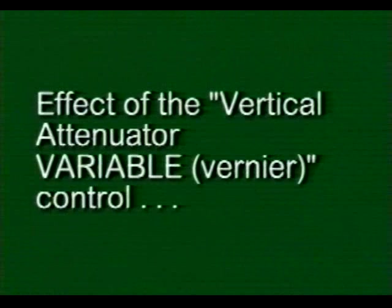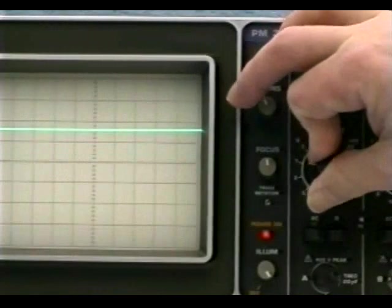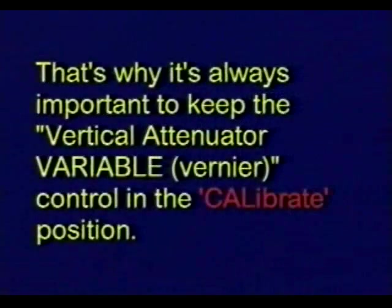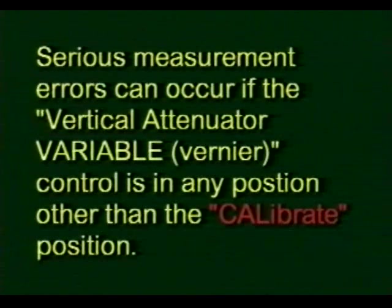Let's take a look at the effect of the vertical attenuator variable vernier control for a moment. What we notice is the trace deflection decreases as the control is rotated counterclockwise. This occurs even though the battery voltage remains constant at 1.5 volts. This is why it's always important to keep the vertical attenuator variable vernier control in the calibrate position. Serious measurement errors can occur if the vertical attenuator variable vernier control is in any position other than the calibrate position.